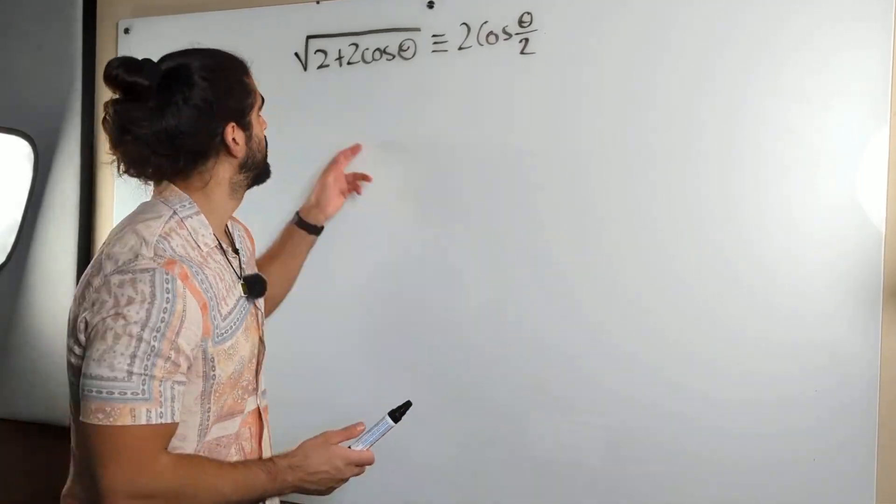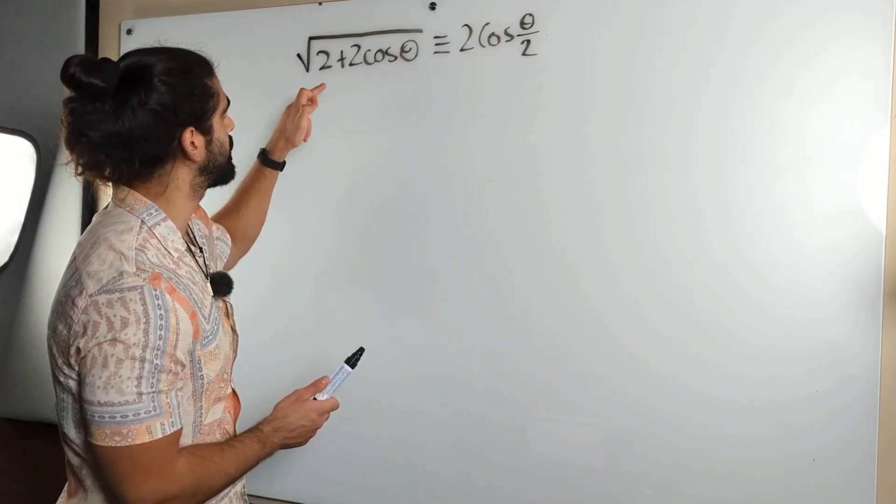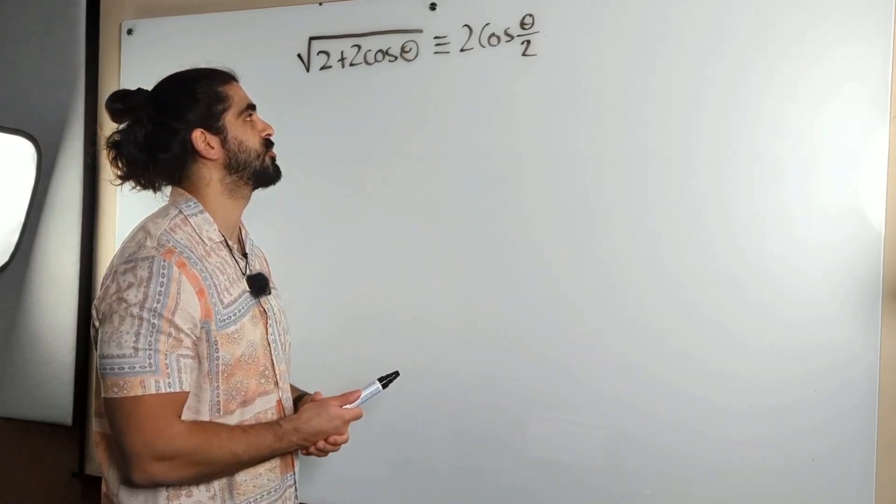Proofs in that. Prove √(2 + 2cos(θ)) is equivalent to 2cos(θ/2).